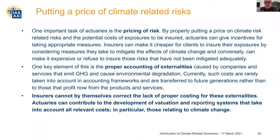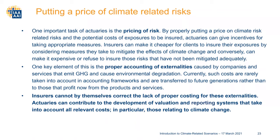Another very important part is the proper accounting of externalities. Companies that emit greenhouse gases and cause environmental degradation currently do not have to reflect that properly in most accounting systems. The consequences of greenhouse gas emissions are basically the problem of future generations — companies can make profit now while the losses will accrue only in later years. Actuaries can contribute to the development of a proper evaluation and reporting system that takes into account all relevant costs relating to climate change, so that not just future generations are burdened with the costs we cause.